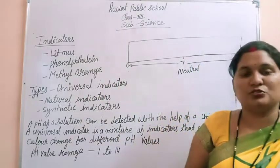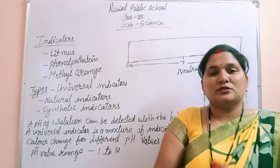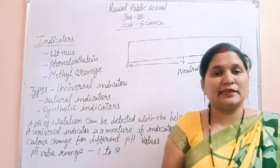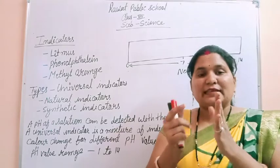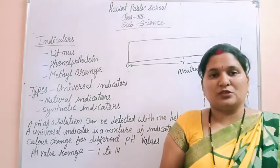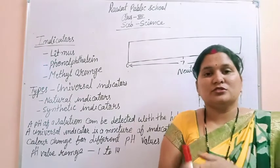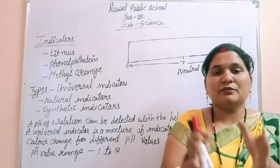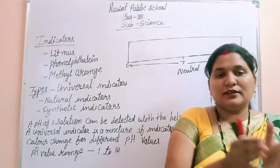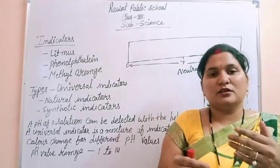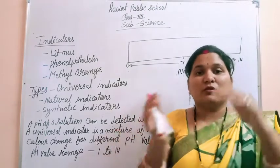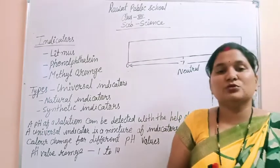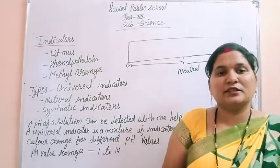The third indicator is Methyl Orange, which is a synthetic indicator. When Methyl Orange comes into contact with acid, it changes to pink color. When Methyl Orange comes into contact with a basic solution, it changes to yellow color.